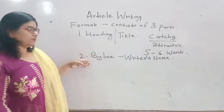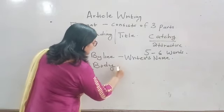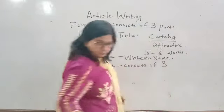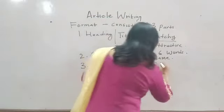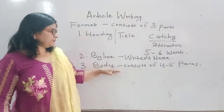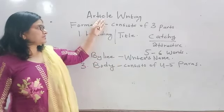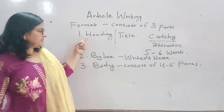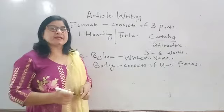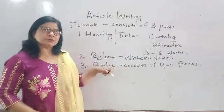Now we will come to the third part, that is the body. It consists of 4 to 5 paragraphs. So article writing has got 3 parts: the first one is heading, the second one is byline, and the third one is the body. Now one by one I will tell you what content to write in the body according to paragraphs.